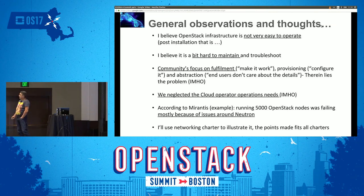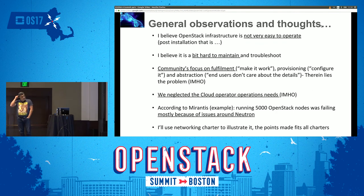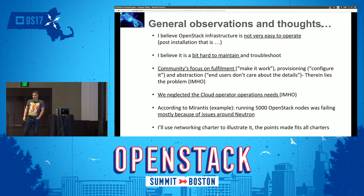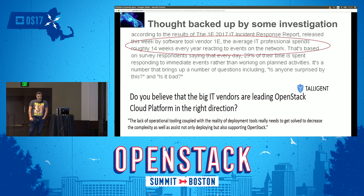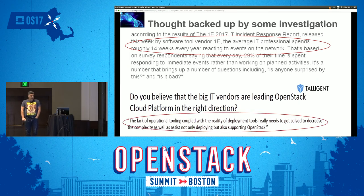This is a statement I took from Reronti's presentation yesterday — a great guy who explained running 5,000 nodes. He said that most of the failures happened because of issues in networking. I'm using the networking charter here to explain, but I think it fits for others. That's a survey about IT spending a lot of time troubleshooting networking, and there's a lack of operational tooling coupled with OpenStack today.